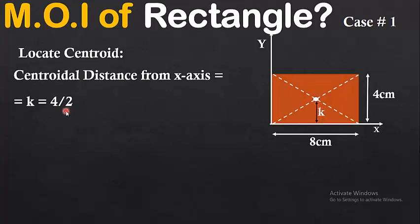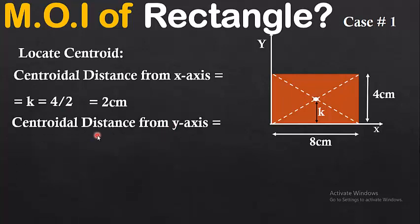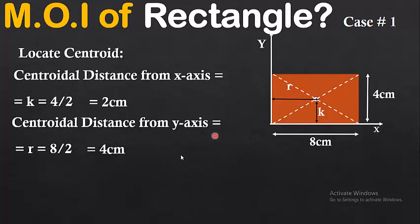Similarly, the centroidal distance from the y-axis is shown by the distance r. The total base length is 8 cm, and dividing by 2 gives the centroidal distance from the y-axis: r = 4 cm. Please follow this step-by-step process carefully and keep your attention on the slides.